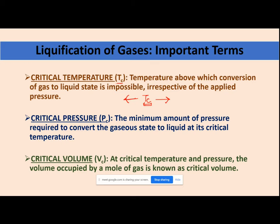Critical temperature is that temperature above which you cannot liquefy your gas. We can define it in three ways: first, it is the temperature above which conversion of gas to the liquid state is impossible; second, it is the temperature below which conversion of gas to liquid is possible; third, it is the temperature above which the existence of the liquid state is not possible.